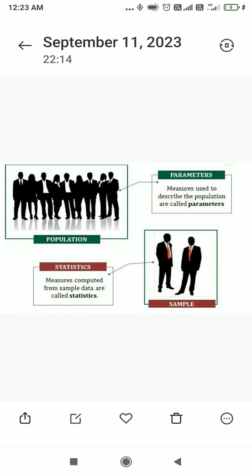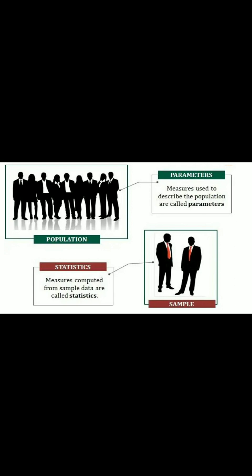The next very important definition is parameter. A statistical constant of population is called a parameter. And statistics is a constant of sample. The constant of population is called parameter; the constant of sample is called statistics.